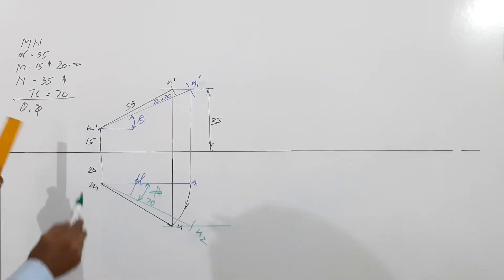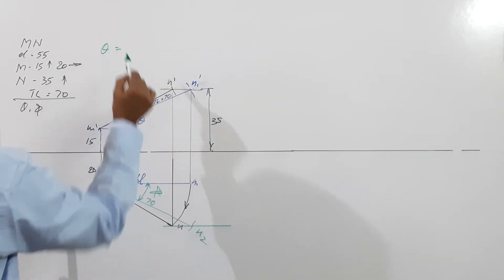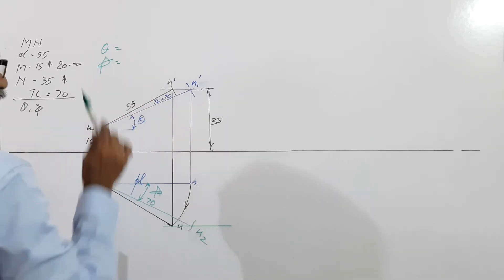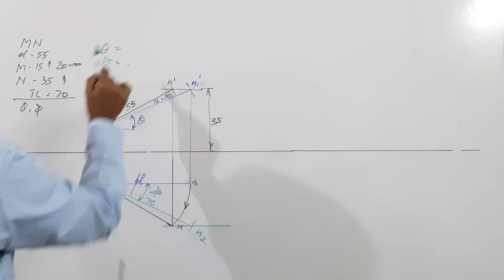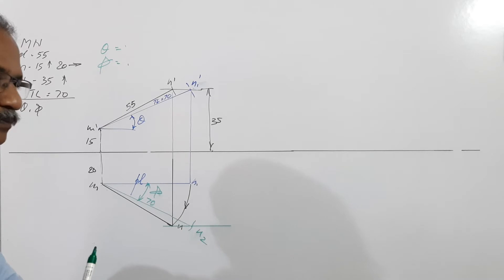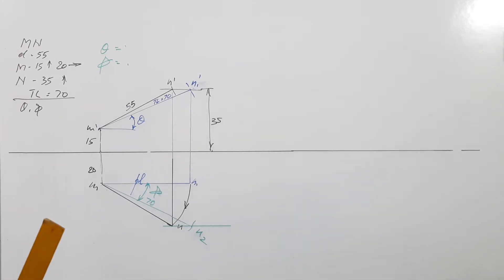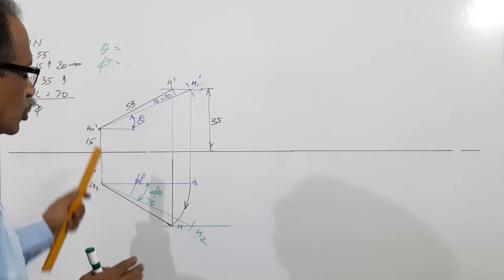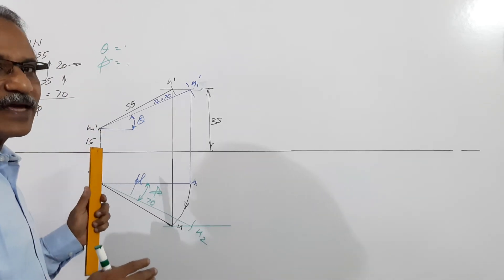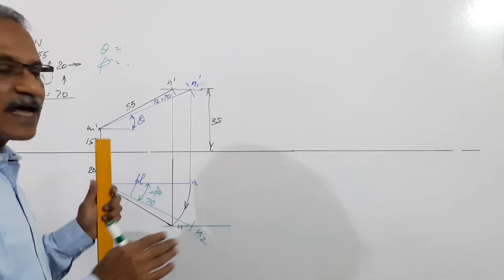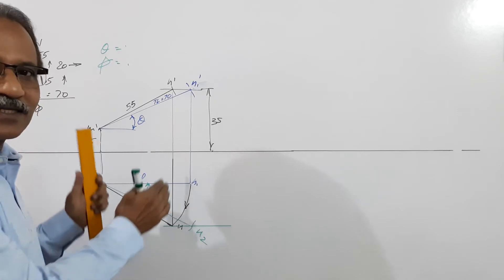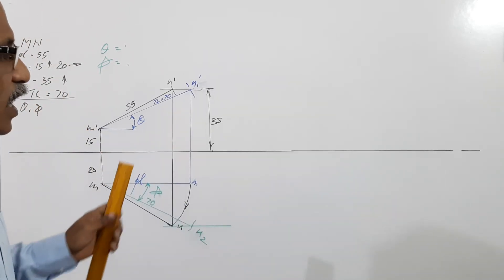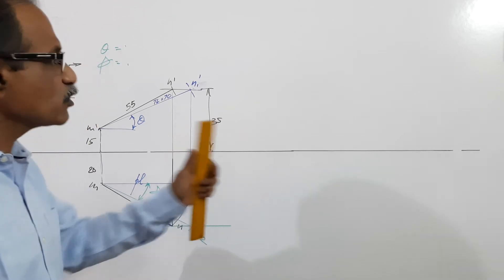So that is the solution. You can measure theta and phi and record the given answers. I do not know the correct values of theta and phi right now — I will draw them to dimensions and add the results at the end of this answer. Now coming to question 2.